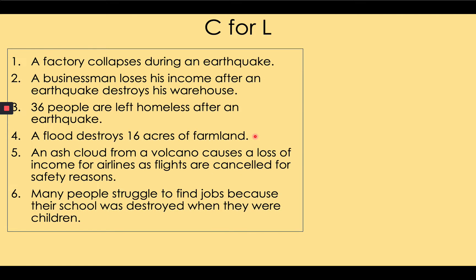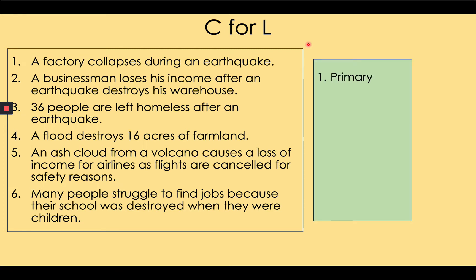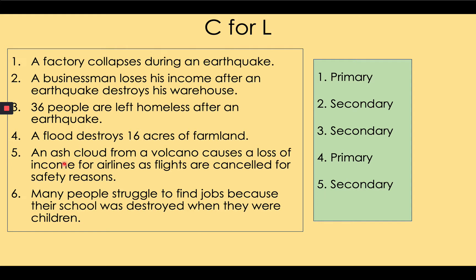Let's see if you understand these ideas. Write primary or secondary next to one to six for each of these statements. Number one, primary. Two, secondary — the loss of income happens because the building was destroyed, not because of the shaking. Three, secondary — the shaking didn't make them homeless, the building collapsing made them homeless. Four, primary — the flood directly destroyed the farmland; the flood is the hazard. Five, secondary — loss of income is secondary. Six, secondary. Give yourselves a mark out of six.